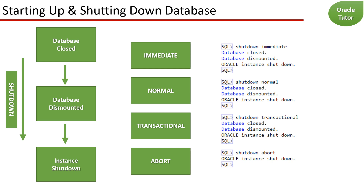The abort shutdown mode puts the database in an inconsistent state and requires recovery before it can be started again. Therefore, you should only use this mode when necessary. It is not advisable to back up the database in this state. The abort shutdown mode is typically used when no other form of shutdown works, when there are problems with starting the database instance, or when you need to shut down immediately because of an impending situation such as notice of a power outage within seconds.